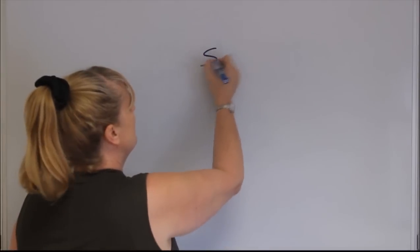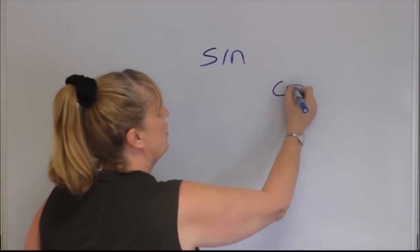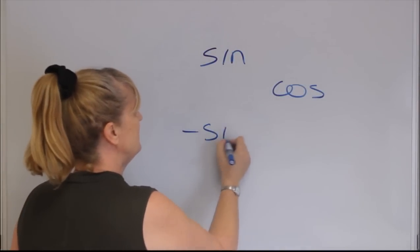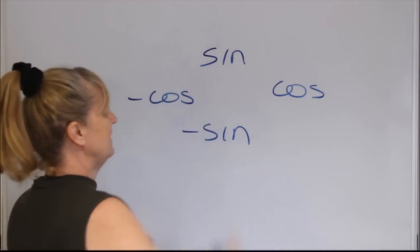Draw a circle: sine, cos, negative sine, negative cos.